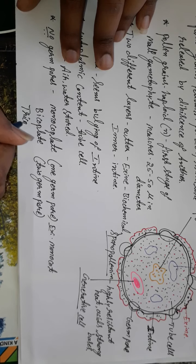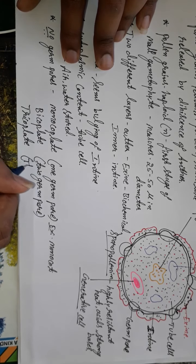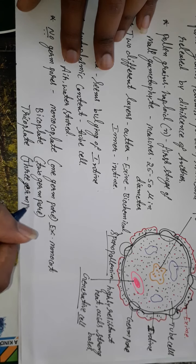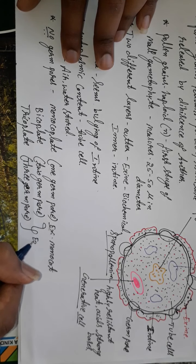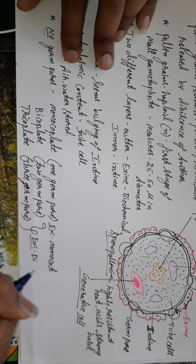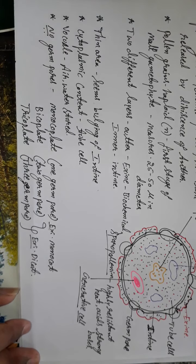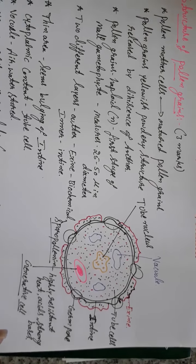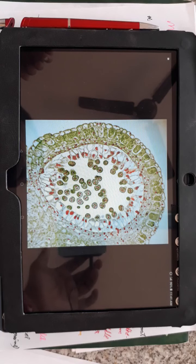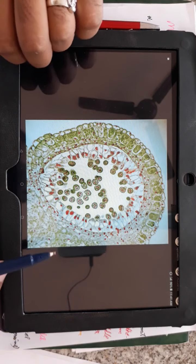The third type is tricoplate, which possesses three germ pores. This is the tricoplate type, and it is the most commonly found structure in pollen grains. This concludes the classification of pollen grain types by germ pores.